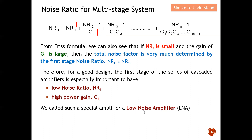Because of this, for a good design the first stage of a cascaded amplifier is especially important. It must have a very low noise ratio NR1 and also a high power gain G1. We call this special amplifier a low noise amplifier (LNA). For a radio receiver, the first stage is typically a low noise amplifier — it amplifies the signal first while ensuring a low noise ratio. It is always desirable to have NR as small as possible and high gain on the first stage.